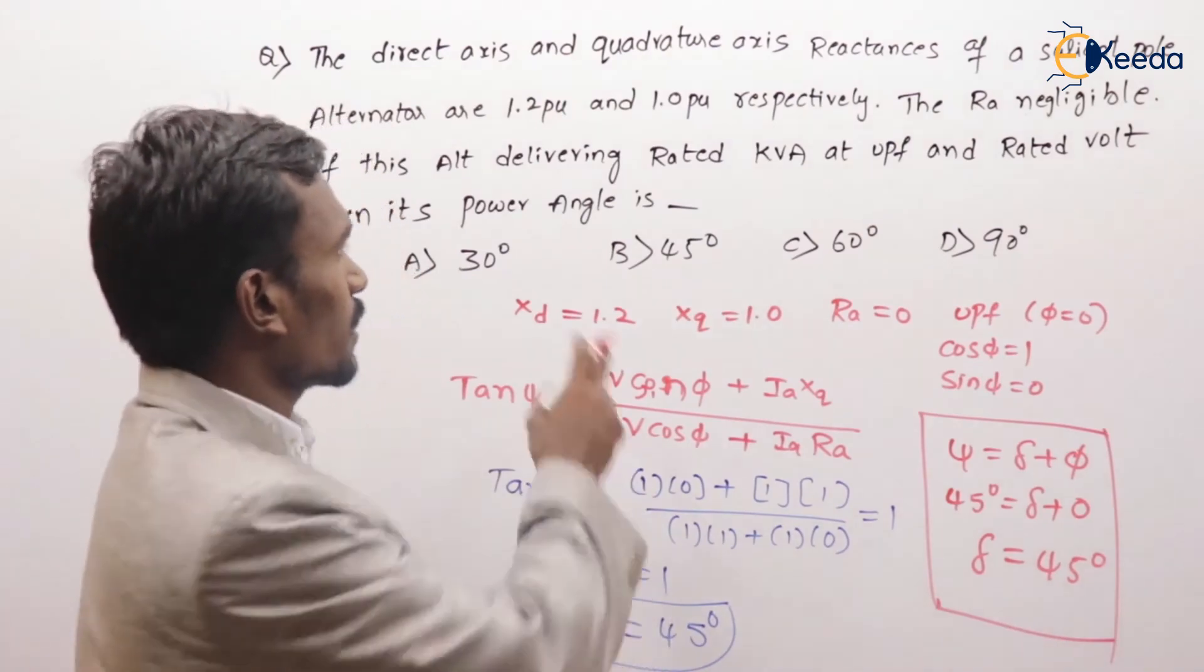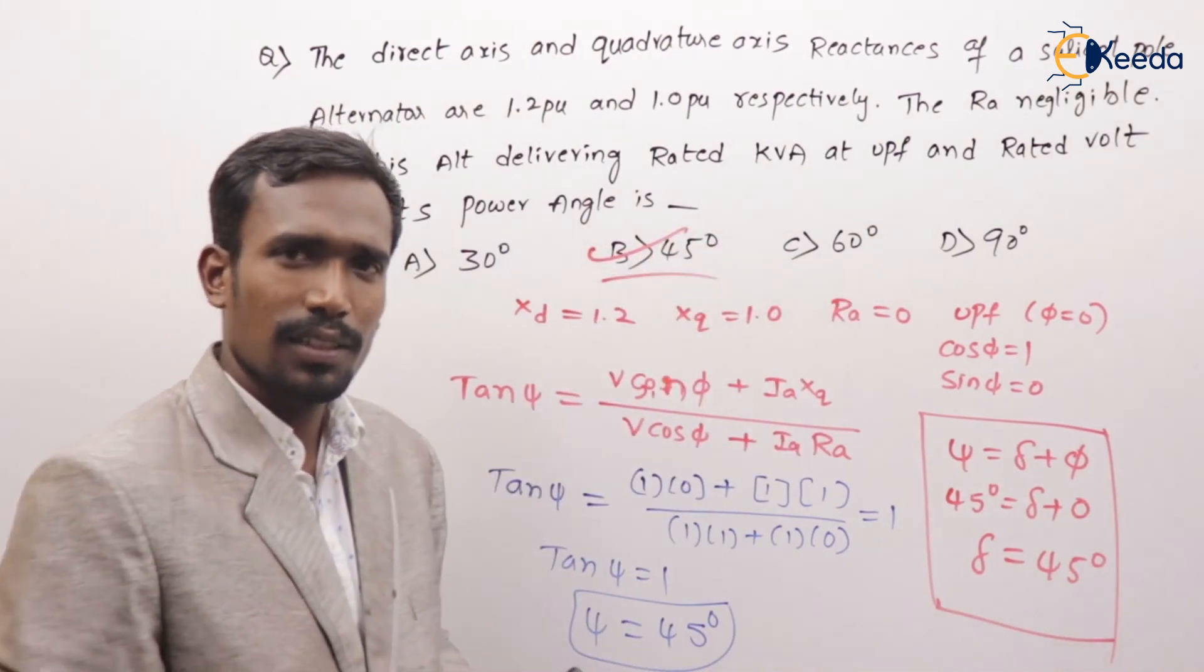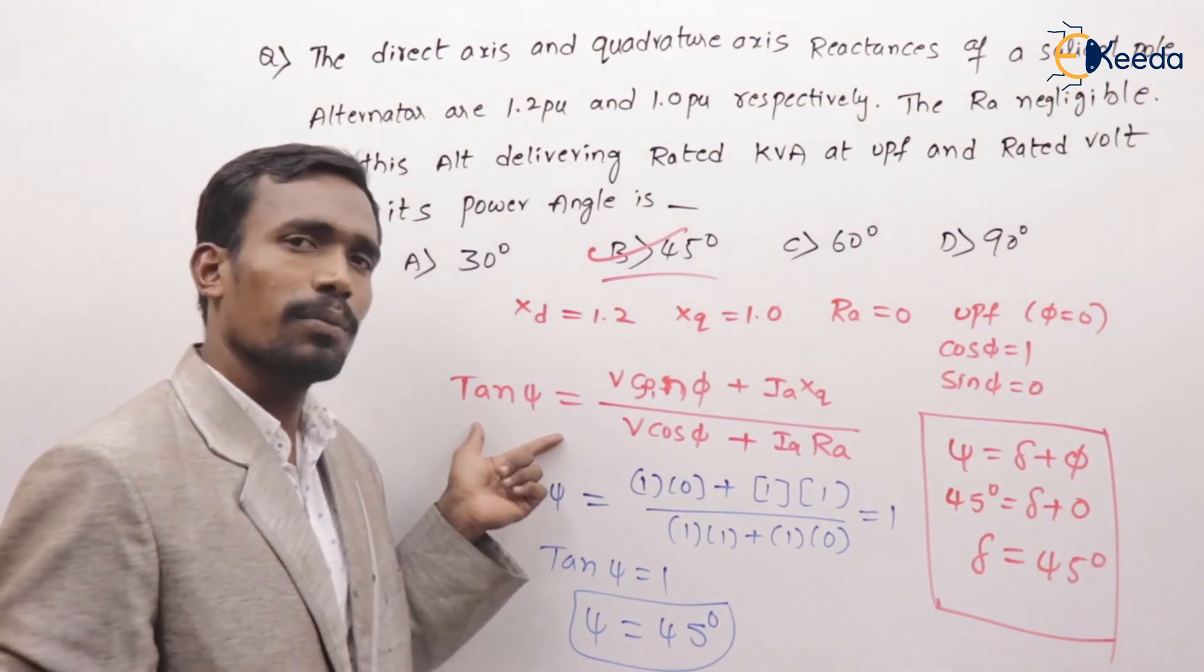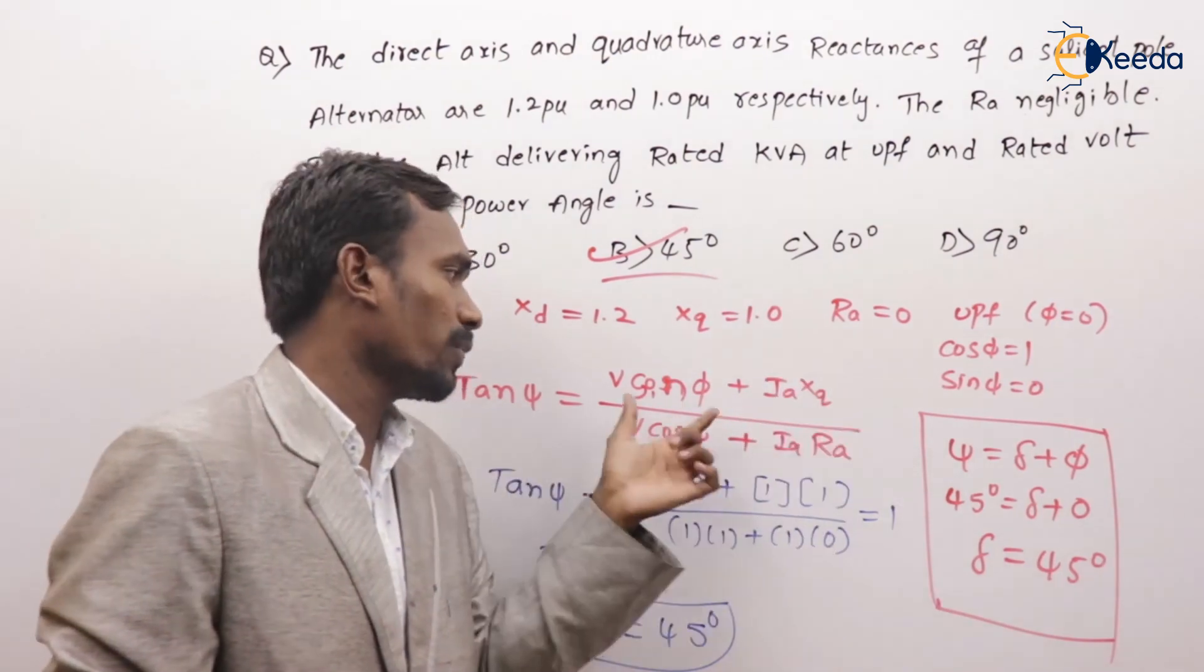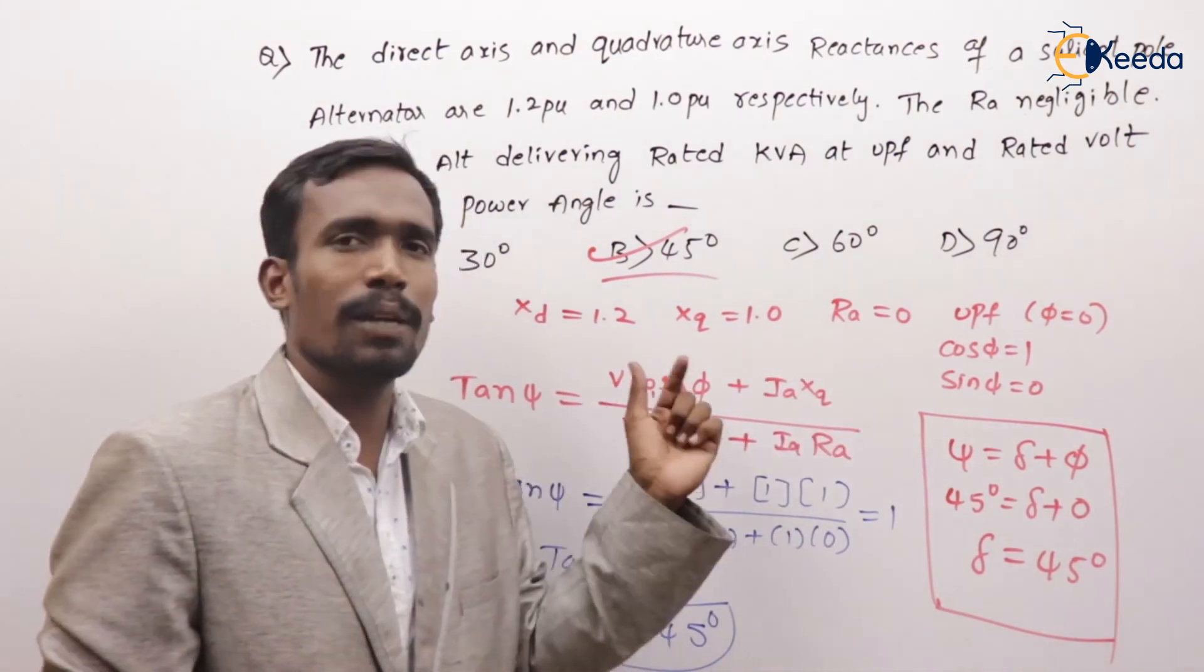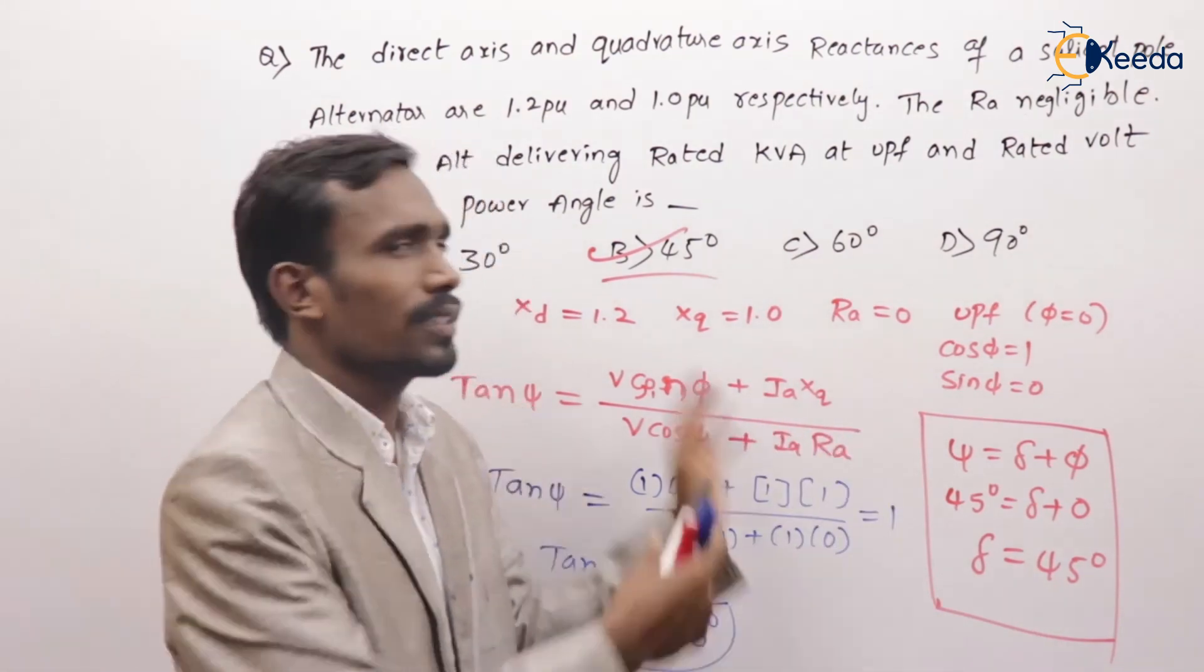Tell me which of the following is the correct answer? Option B, 45 degrees. So what is the formula? Tan ψ is equal to V sin φ plus Ia xq divided by V cos φ plus Ia Ra. This is the answer.